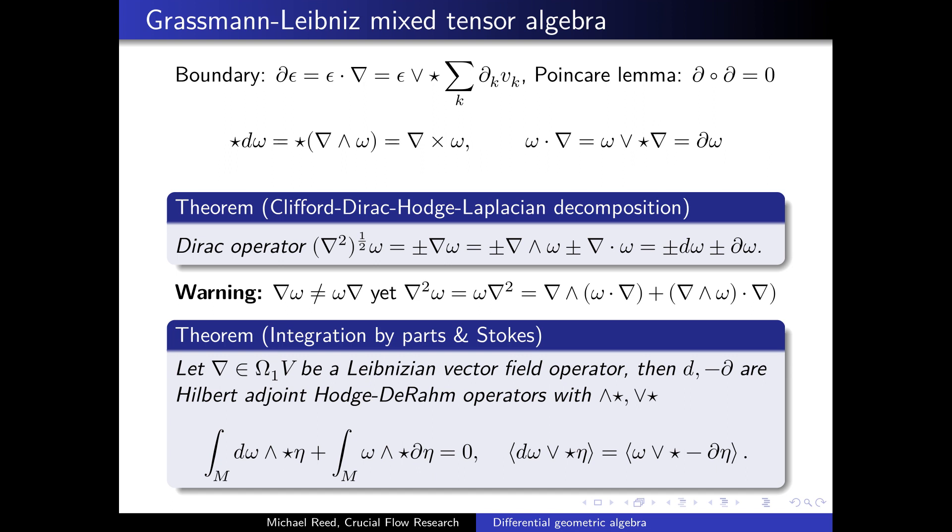We take epsilon, for example, and take the regressive product with the complement of NABLA. That defines the boundary operation, which when composed with itself equals zero.